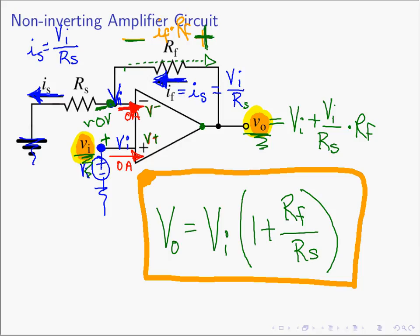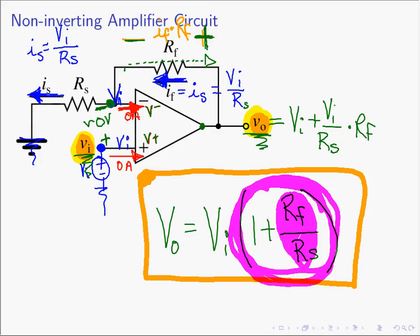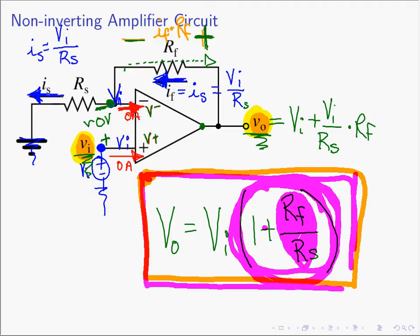Also notice that the gain formula, 1 plus RF over RS — RF and RS are values, and so the smallest you can make this ratio is basically near zero, and so the smallest you can make this total gain is going to be 1. You can make it bigger, but you can't make it smaller than 1. The non-inverting amplifier strictly amplifies; you cannot attenuate the input toward the output because 1 plus RF over RS is always going to be greater than or equal to 1. This is the formula you need to commit to memory, and the circuit that goes with it — this is the non-inverting amplifier circuit, and it occurs a lot in our analysis of op-amps.